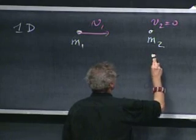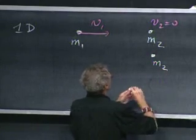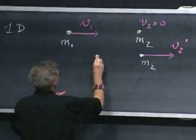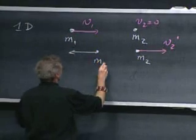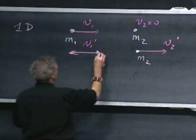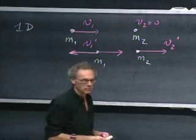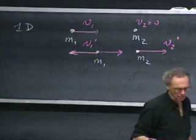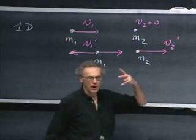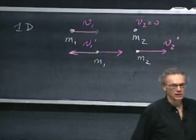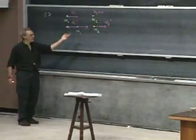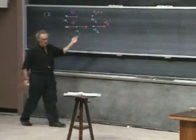After the collision, M2 has a velocity V2 prime and M1 has a velocity V1 prime. I don't even know whether it's in this direction or that direction — you will see that either one is possible. To find V1 prime and V2 prime, you need two equations. If there is no net external force on the system during the collision, then momentum is conserved.